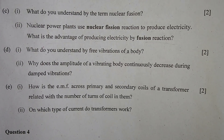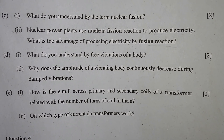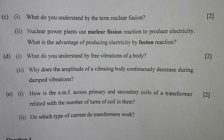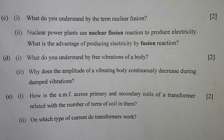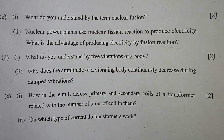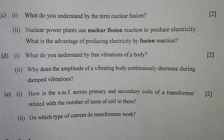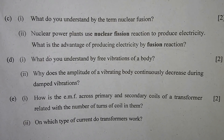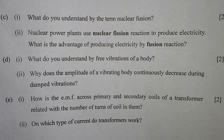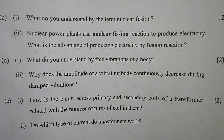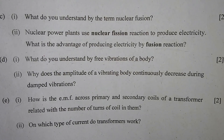Part C, number 1: What do power plants use — nuclear fission reaction to produce electricity? The advantage of producing electricity by fusion reaction is that less mass is used for nuclear fusion compared to nuclear fission.